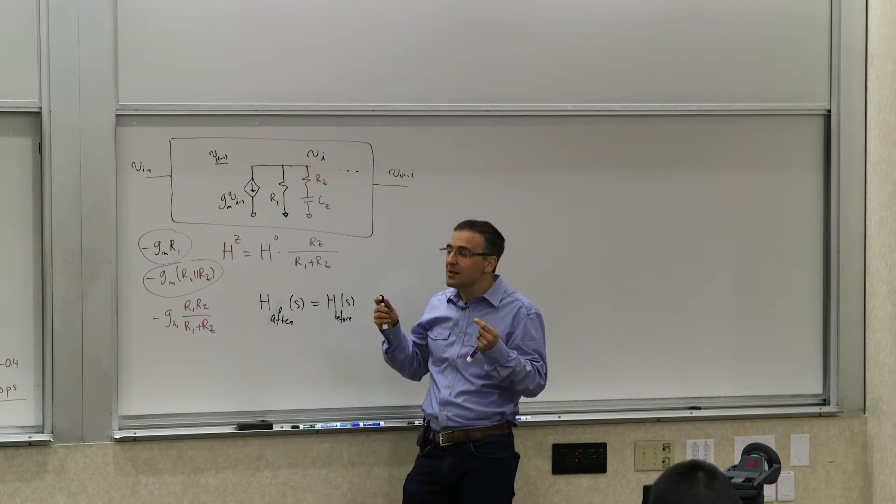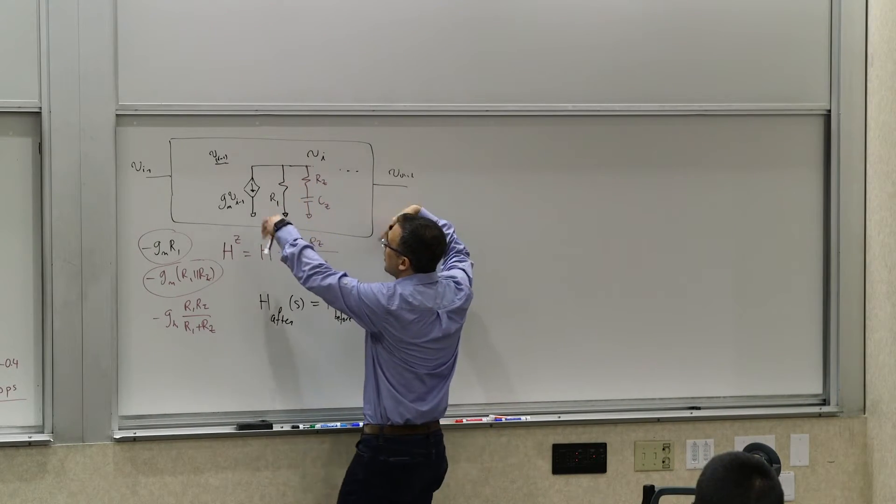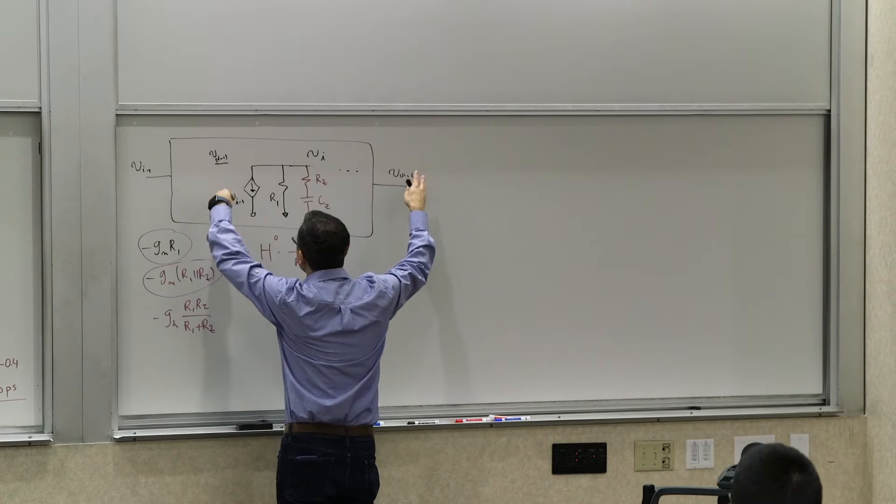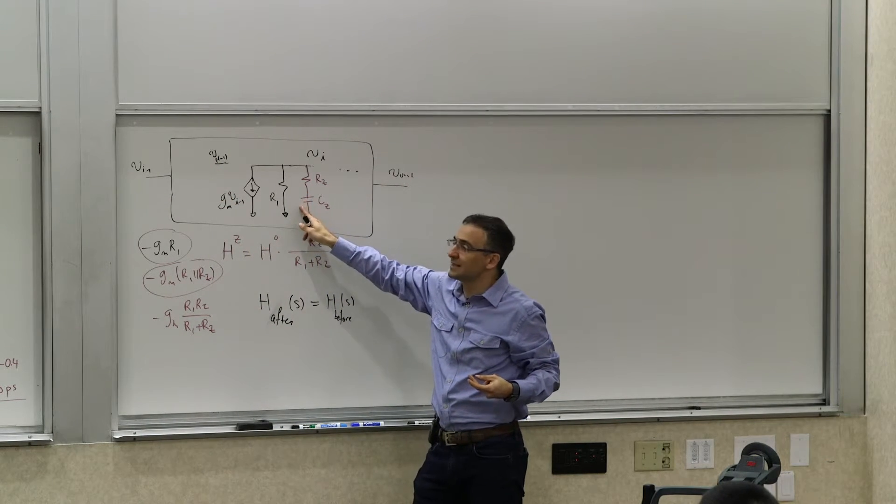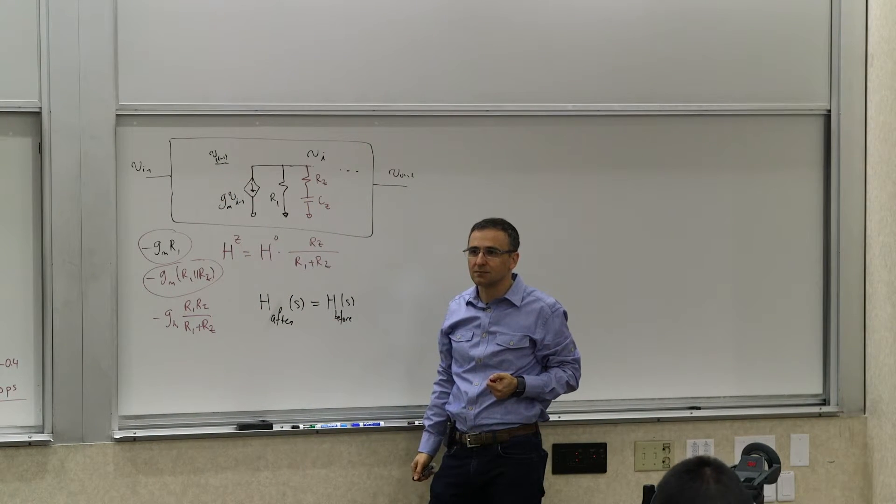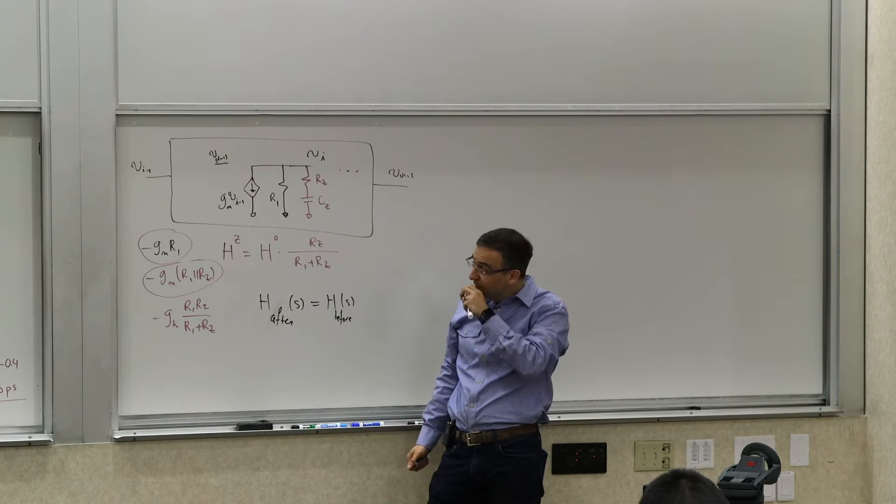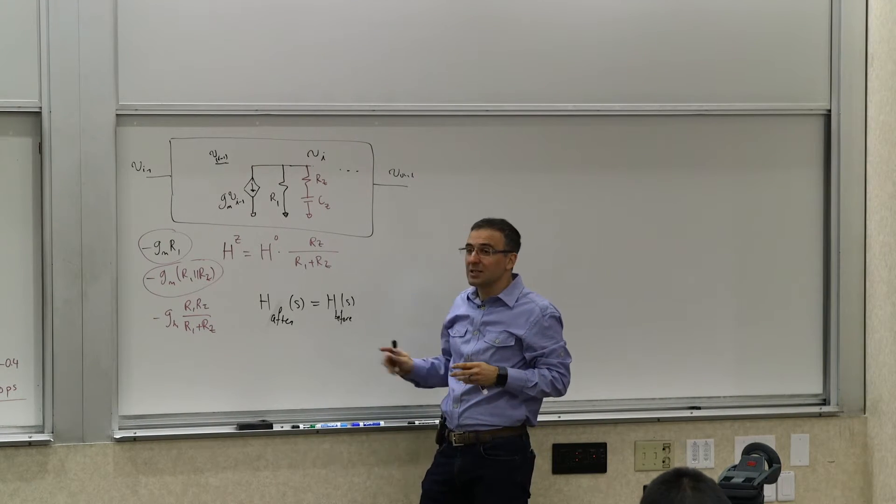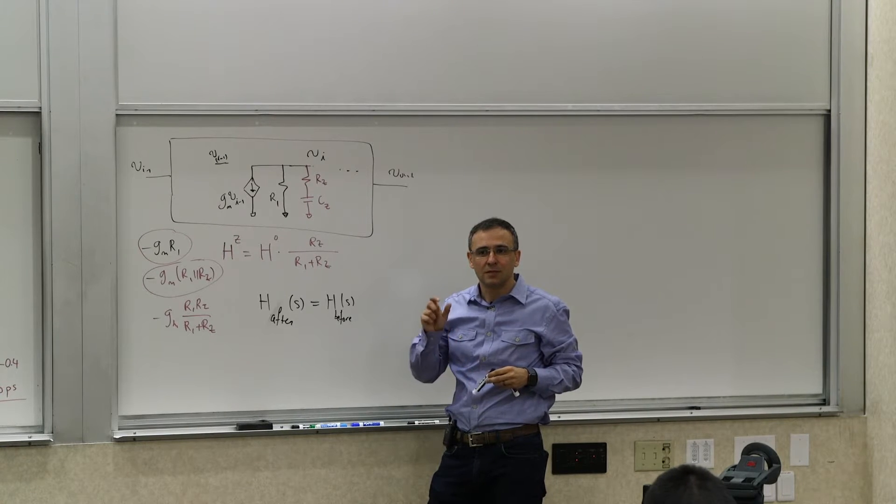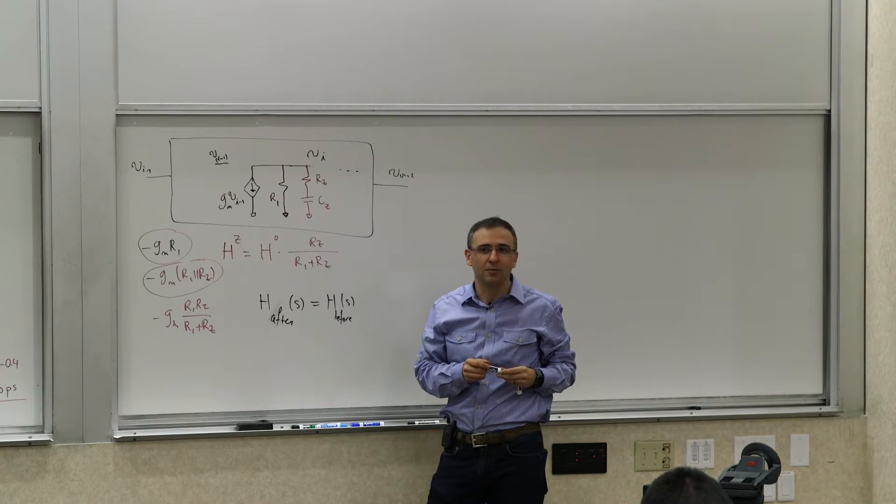So this is the assumption we are making here, right? Then, shorting, shortening or opening of capacitors and inductors elsewhere in the circuit is not going to change the resistance seen by this guy. Do you agree? Therefore, this becomes an uncoupled, this will introduce an uncoupled pole and an uncoupled zero.